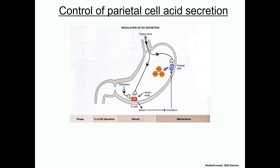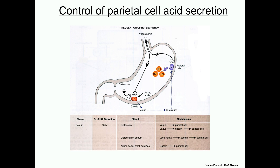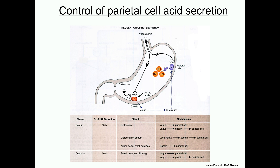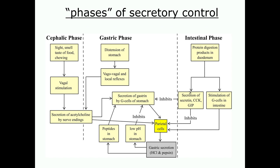Control of about 60% of secretion is local or gastric, stimulated by distension of the stomach or signals that indicate digestion has begun, such as amino acids or small peptides. These stimuli most often affect local reflexes or local cells, including the cells that produce gastrin. The cephalic phase controls about 30% of secretion, and this is done through the vagus nerve, which can be stimulated by distension or through interpretation of smell, taste, or conditioned responses. The phases of secretory control also include an intestinal phase triggered by the presence of protein digestion products in the duodenum.